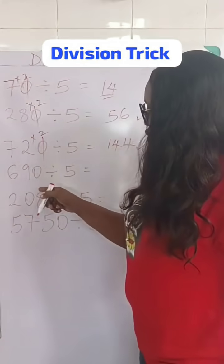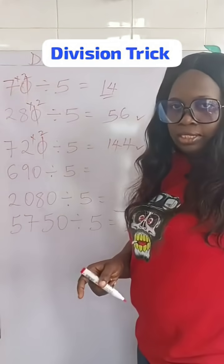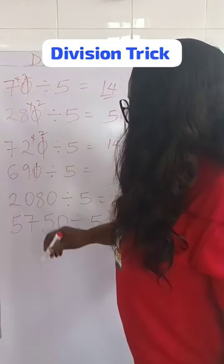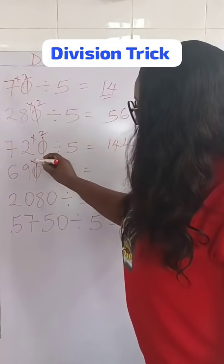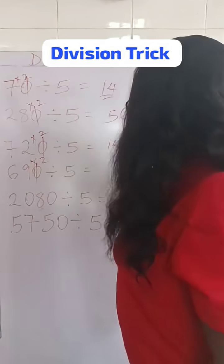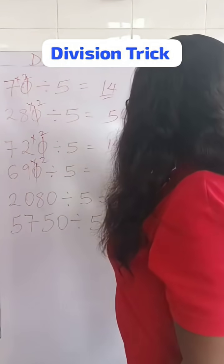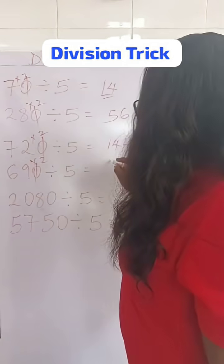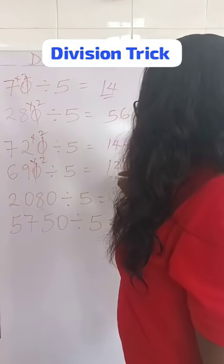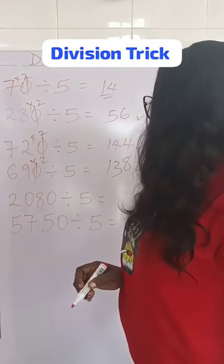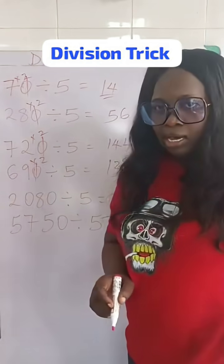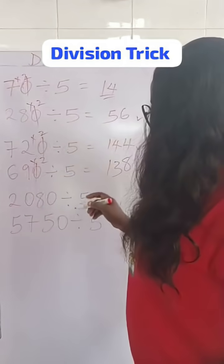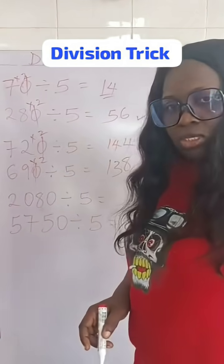Let's look at number 4. We have 690 divided by 5. Same thing — we multiply by 2. 9 times 2 is 18, 6 times 2 is 12, plus the 1 is 13. So we are going to have 138 as our answer for 690 divided by 5.